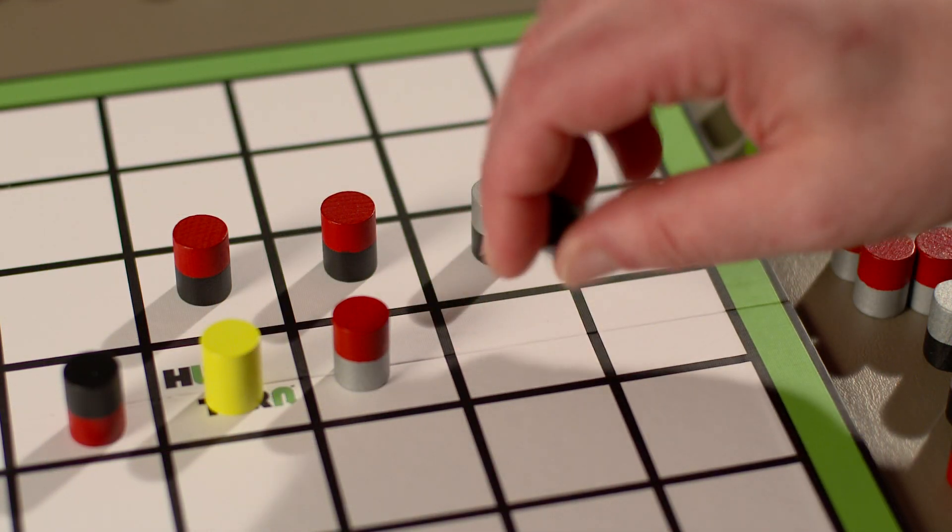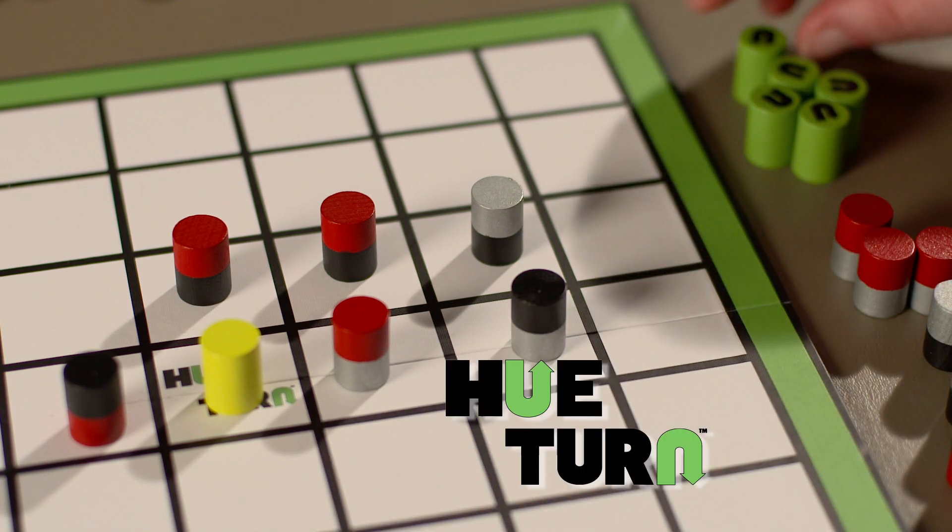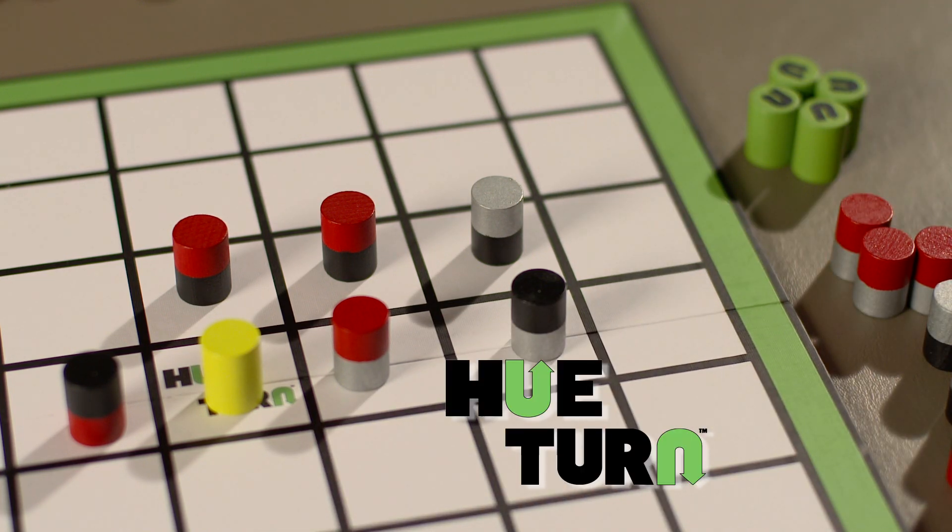Instead of placing a peg, a player may choose to flip a peg on the board to its secondary color. This is called Hu-Turn. Discard one of your green pegs when you choose this alternate action.